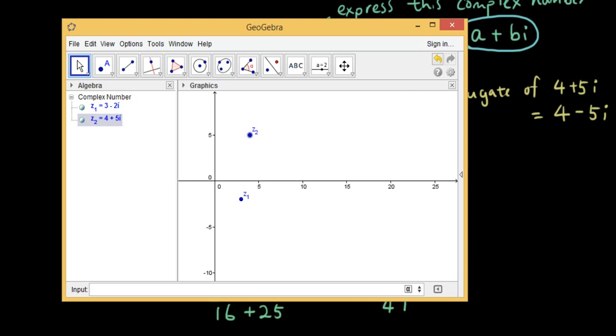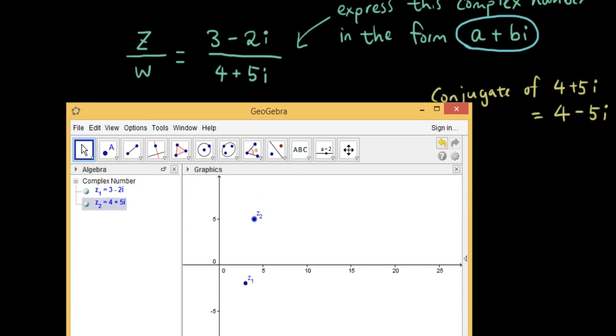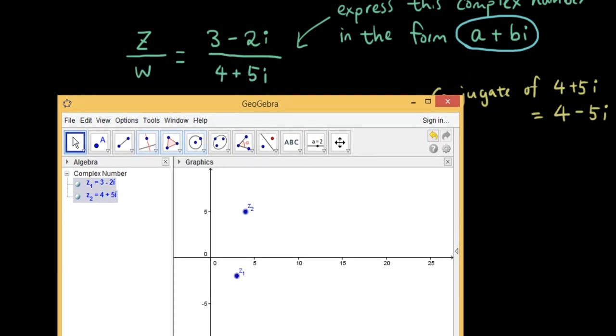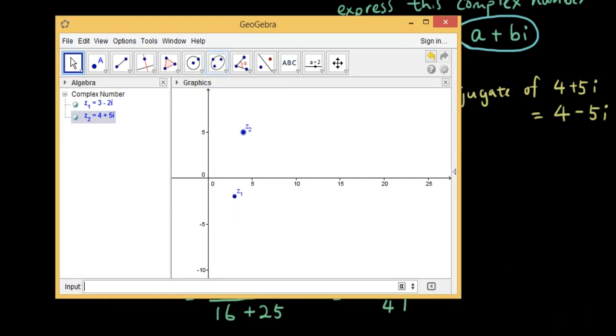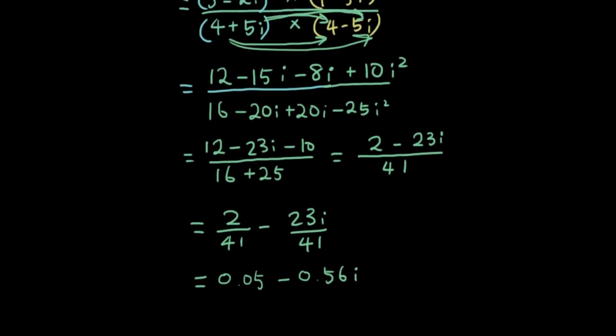So as you can see here, I have typed in z1 is 3 minus 2i which matches z, and z2 is 4 plus 5i which matches w. So now I'm going to do z1 divided by z2 and see what it gives me. So I have z3 which is equal to 0.05 minus 0.56i, which is exactly what I have as the answer.